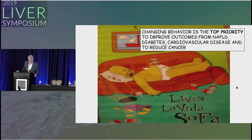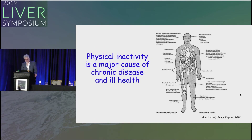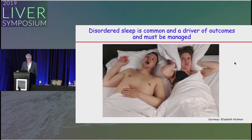The biggest challenge is changing behavior — that has to be the top priority to improve outcomes from NAFLD, diabetes, cardiovascular disease, and cancer. Physical inactivity is a major cause of chronic disease and ill health. Disordered sleep is emerging as a very common and important driver of outcomes, and sleep apnea is an important driver of NAFLD — patients with sleep apnea have a higher rate of fibrosis severity.